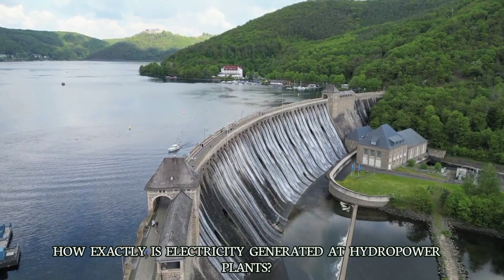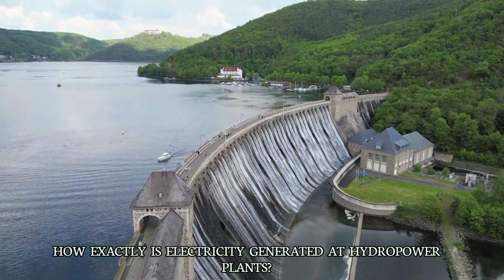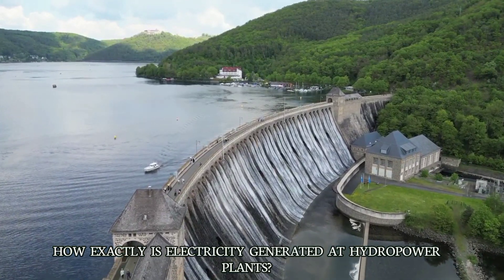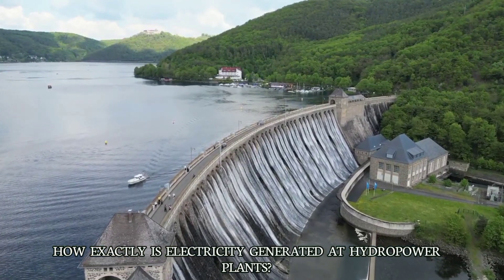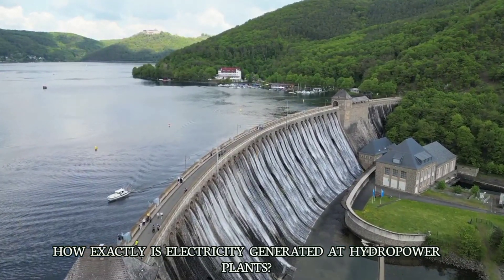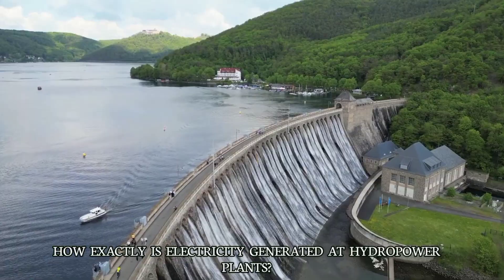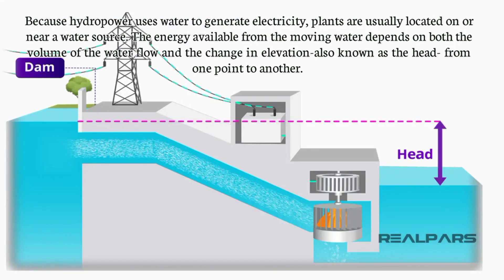Chapter 4: How exactly is electricity generated at hydropower plants? Because hydropower uses water to generate electricity, plants are usually located on or near a water source.